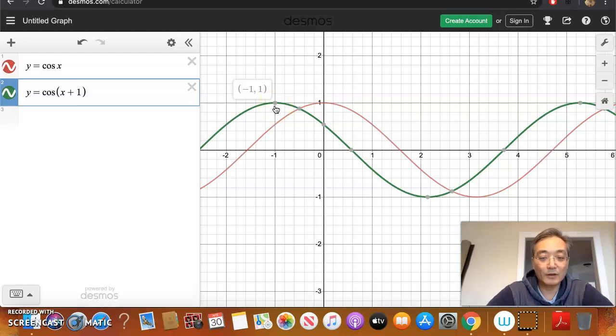So that kind of gives us a picture of what's happening when you are adding or subtracting to the x value. You're actually shifting your function to the left or to the right. Adding means to the left. Subtracting means to the right.